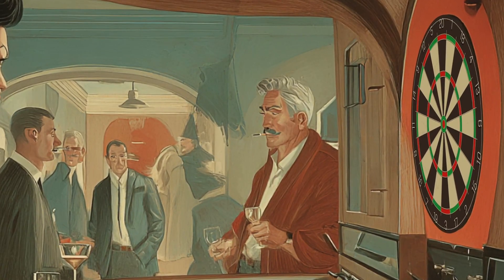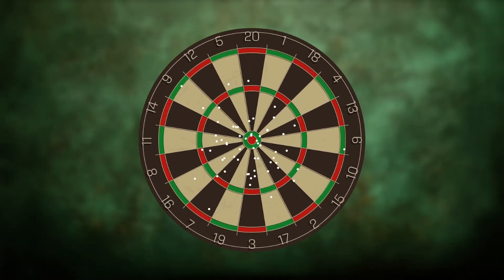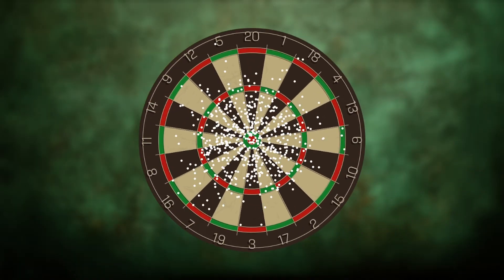Even the best dart players never throw with perfect aim. Each shot lands a little high or low, a little left or right. Over time, these errors lead to a scatter of points on the board.